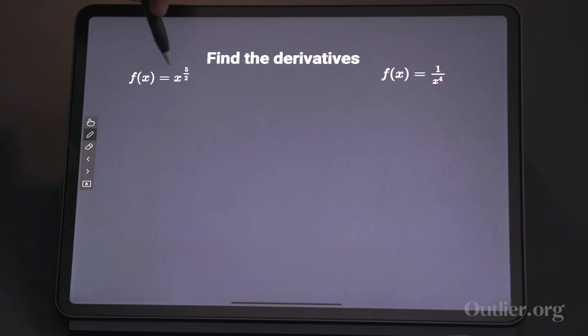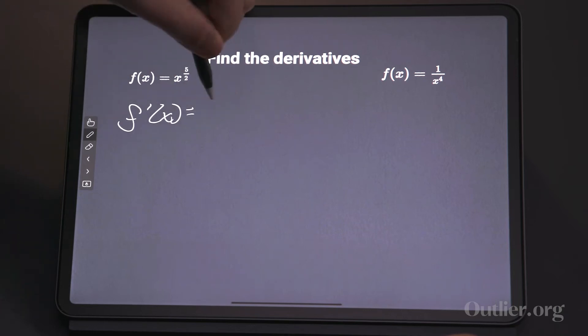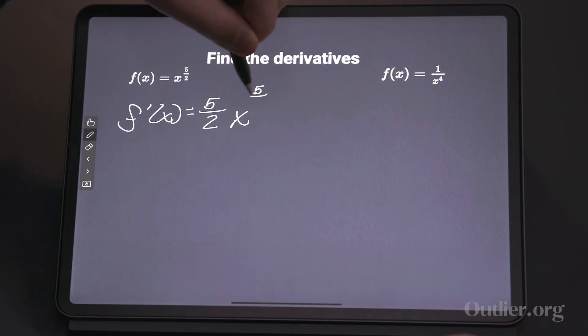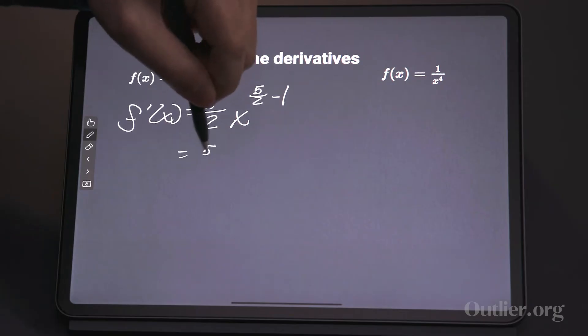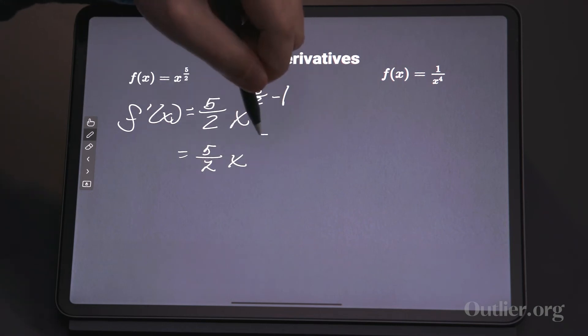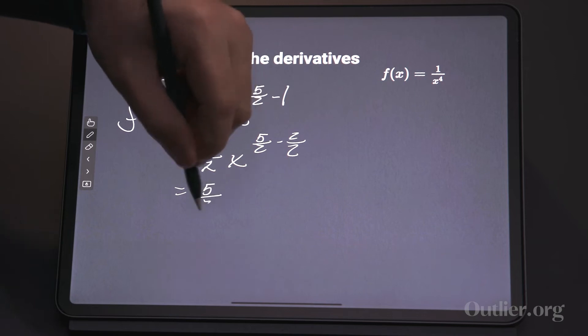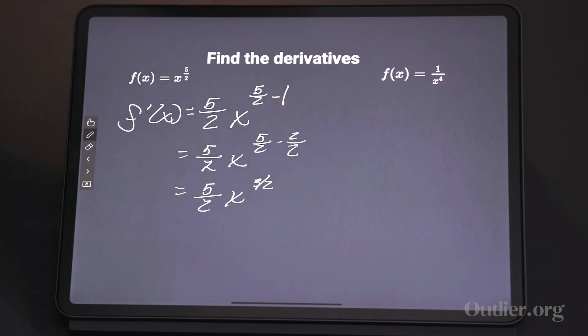Let's look at a more complicated example. If f of x equals x to the 5 halves power, it's the same property. So f prime of x equals — we bring down the exponent — 5 halves x. I would put 5 halves minus one, just to be sure, then do the fraction arithmetic: 5 halves minus 2 halves, which equals 5 halves x to the 3 halves. And there it is.